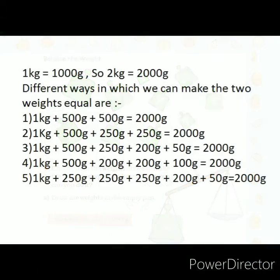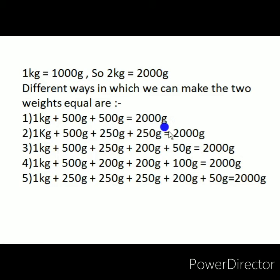These are the different ways to equalize both pans of the balance. In one pan there is 2000 grams. The first way: we can select 1 kg plus 500 gram plus 500 gram, total 2000 grams. So if we give 1 kg and two weights of 500 grams, we can equalize the next pan with 2000 grams. The second method: 1 kg plus 500 gram plus 250 gram plus 250 gram, total 2000 grams.